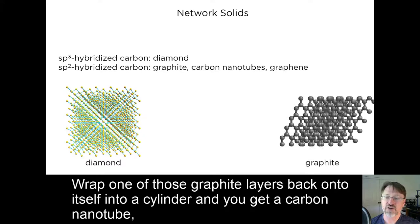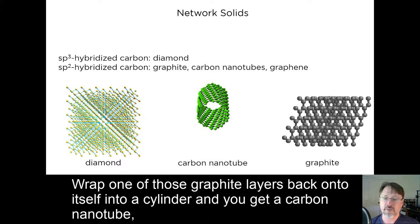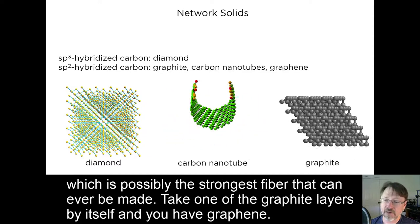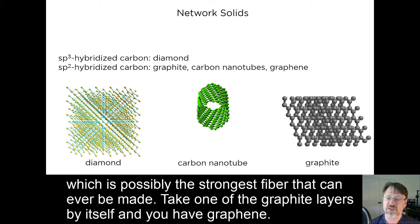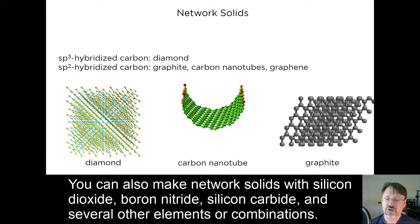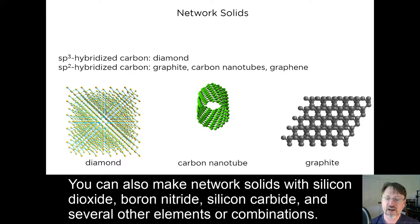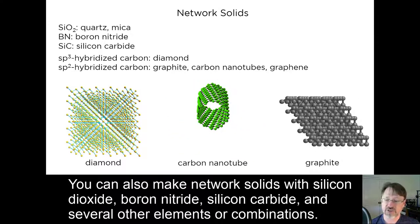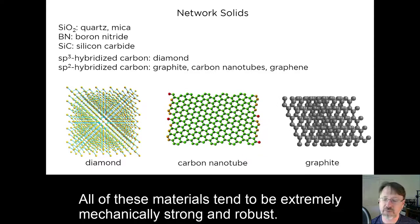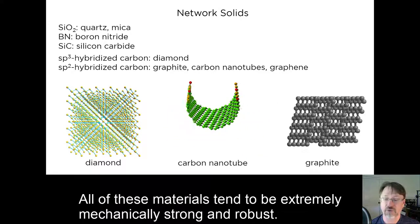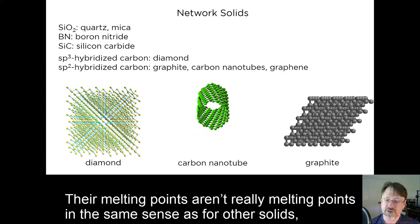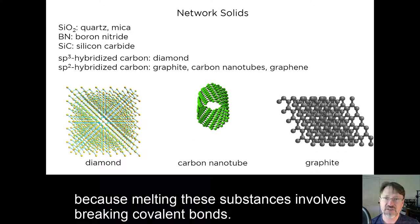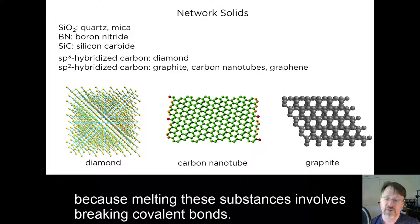Wrap one of those graphite layers back onto itself into a cylinder, and you get a carbon nanotube, which is possibly the strongest fiber that can ever be made. Take one of the graphite layers by itself, and you have graphene. You can also make network solids with silicon dioxide, boron nitride, silicon carbide, and several other elements or combinations. All of these materials tend to be extremely mechanically strong and robust. Their melting points aren't really melting points in the same sense as for other solids, because melting these substances involves breaking covalent bonds.